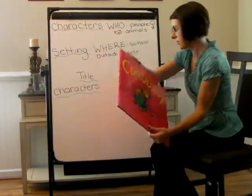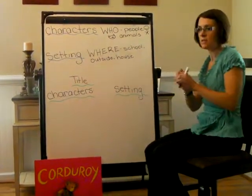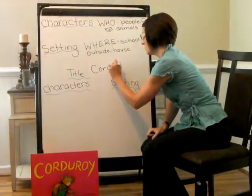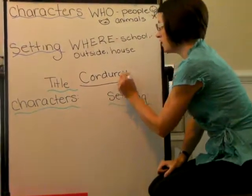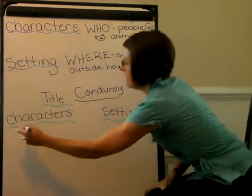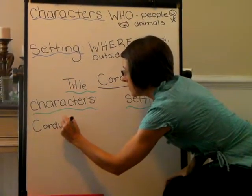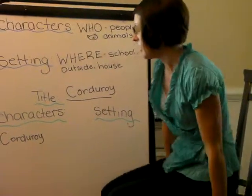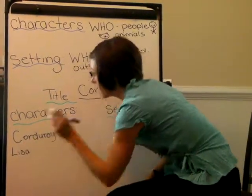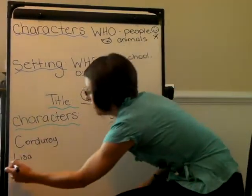Okay, boys and girls, now the first thing we're going to do on our chart is put our title. Can someone raise your hand and tell me what's the title of the story we just read? Very good, Corduroy. And now we're going to review the characters and the setting. Can somebody raise their hand and tell me who's an important character in this story? Right, Corduroy — he was the first character we came across. And can someone tell me another important character? Very good, Lisa, the little girl who took Corduroy home. Now, who's one other character that we came across in the story that helped Corduroy? Very good, the Watchman.